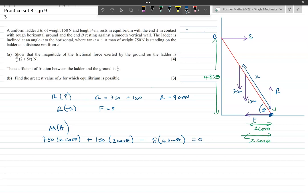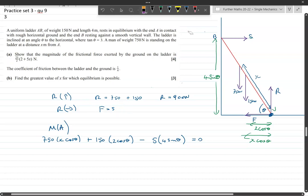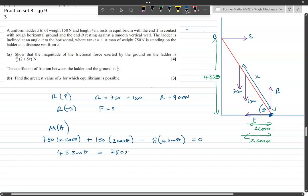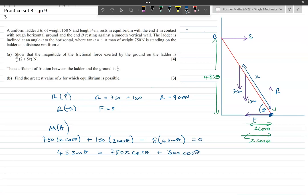Now we can use tan theta is 3. The question wants F, but we know F equals S, so we can work out S. We have 4S sin theta equals 750x cos theta plus 300 cos theta. We can divide through by 2 cos theta, so we'll have 2 times S tan theta equals 375x plus 150.